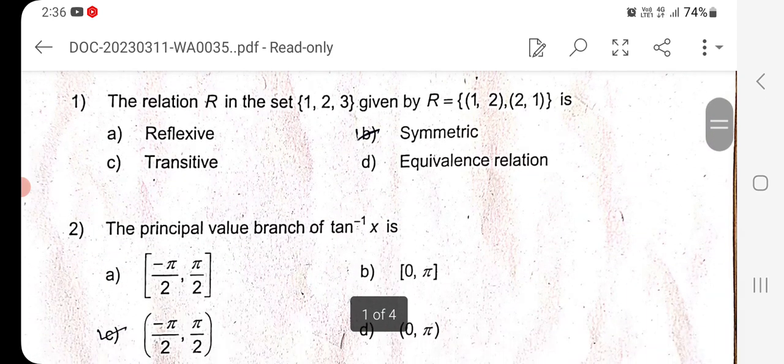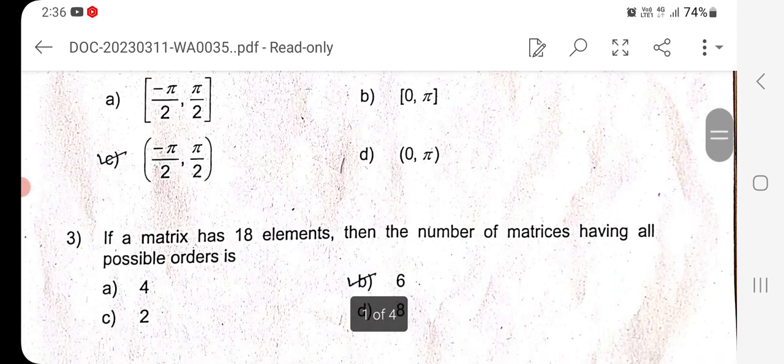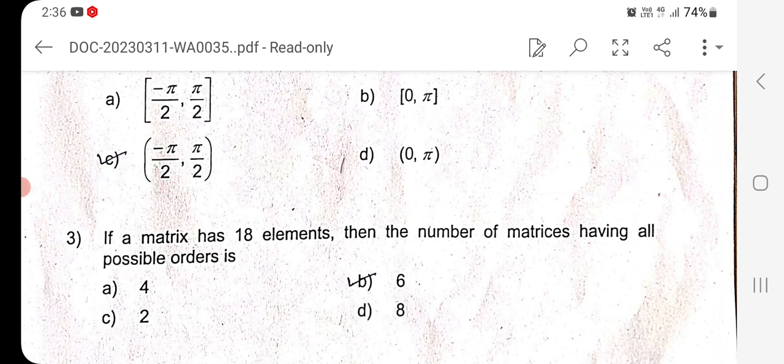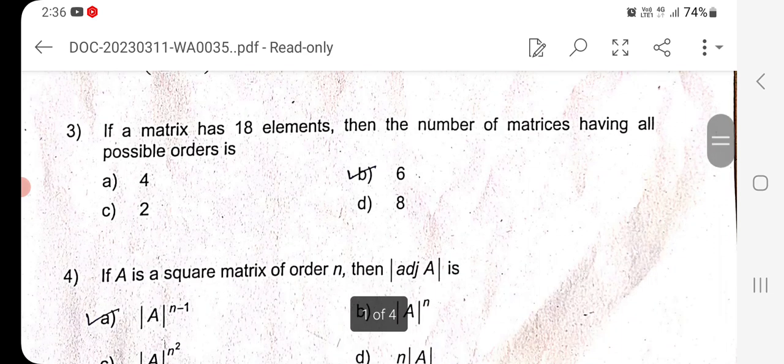Question 2: The principal value branch of tan inverse of X is option C, the right answer. Question 3: If a matrix has 18 elements, then the number of matrices having all possible orders is option B, the right answer. This is 1×18, 18×1, 2×9, 9×2, 3×6, and 6×3. There are 6 possible order pairs.